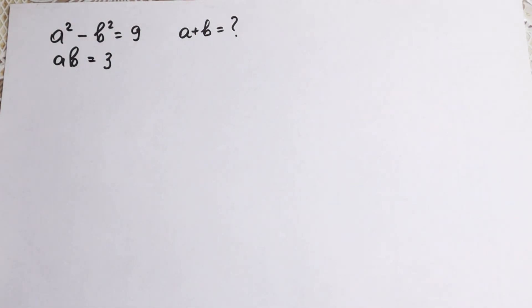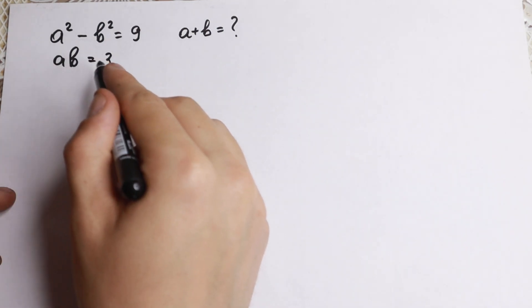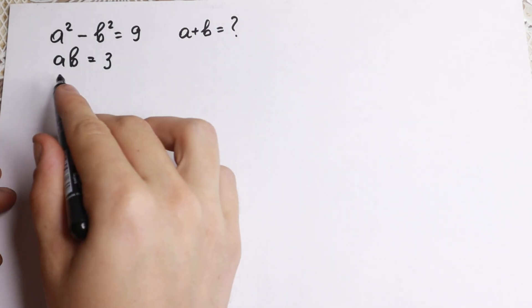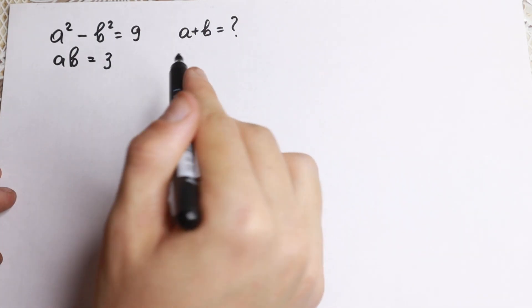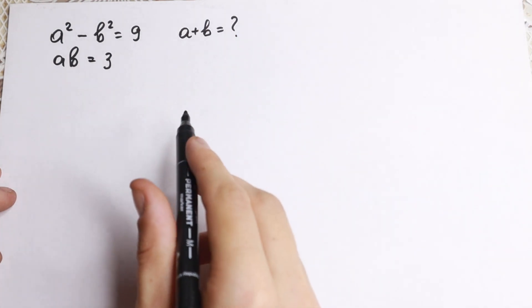Hello everyone! Happy to see you here. Really interesting problem today. We have that a squared minus b squared equals 9, and ab equals 3, and we need to find our sum a plus b.